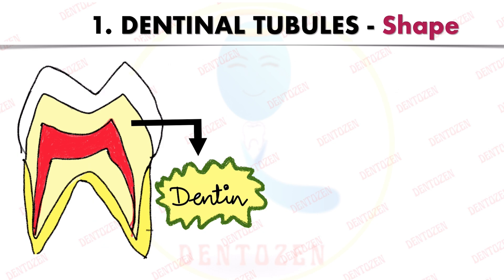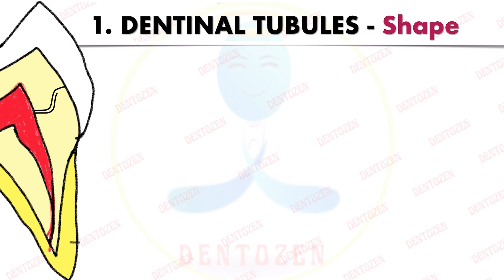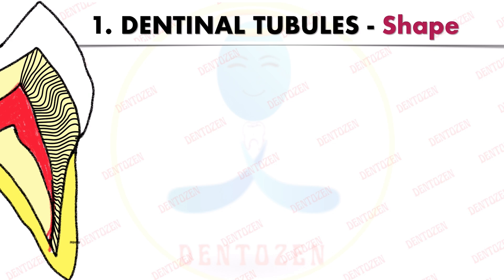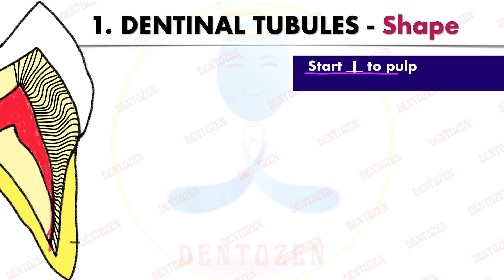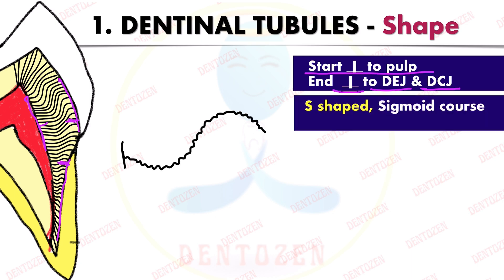If we magnify this area, dentinal tubules start from the pulp surface and go towards the enamel on the outer side in the crown, and towards the cementum in the root portion. They take an S-shape here, but as they reach the root tip and the cusp tip they become straighter. These dentinal tubules start from the pulp surface perpendicular to it and end at the dentino-enamel junction in the crown and dentino-cemental junction in the root, again perpendicular to these junctions.